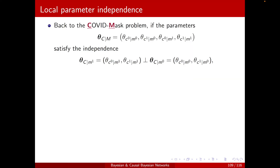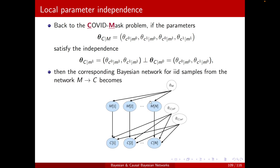What about local parameter independence? Back to our COVID mask problem: we had this compact form representing all parameters. If we break it into two parts — the child node possibilities C0 and C1 conditioned on one realization of the parent M1, and then the same for M0 — and assume they are independent, then we can represent the Bayesian network for IID samples where these parameters appear separately with no link between them. You can verify they are independent because we have V structures.